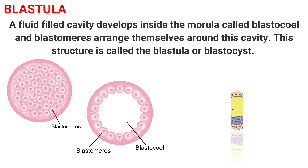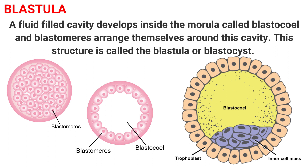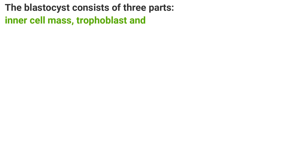Further changes occur in the blastula to form a mature blastocyst. Some blastomeres are attached at the periphery — these are called trophoblast, shown in pink in the diagram. Some blastomeres are aggregated inward at one place — these are called the inner cell mass. In the center, shown in yellow, is the blastocele. The blastocyst consists of three parts: inner cell mass, trophoblast, and blastocele.